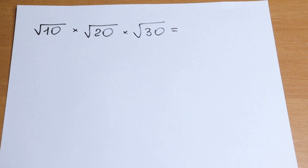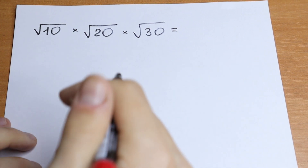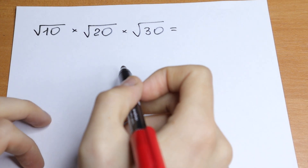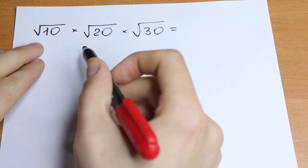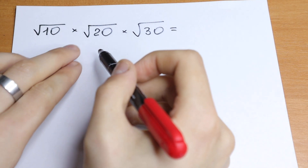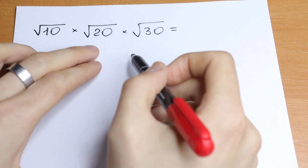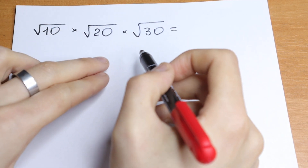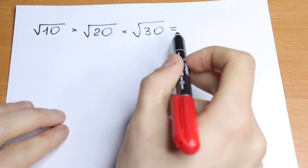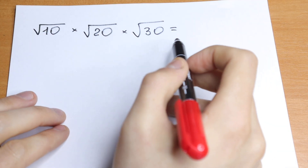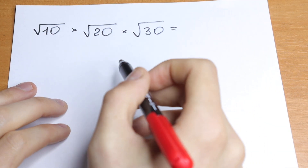Hello everyone, welcome back to MathMove. Today we have an interesting algebra problem. We use radicals. We have square root of 10 times square root of 20 and times square root of 30, and we need to find this value. How can we do this?